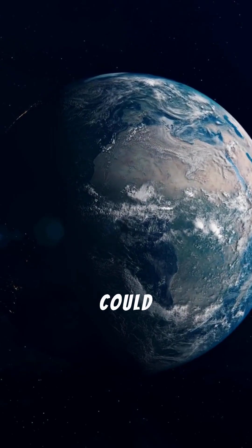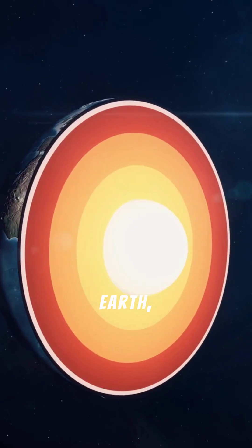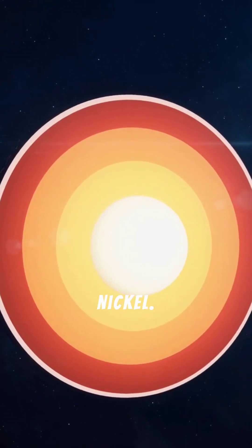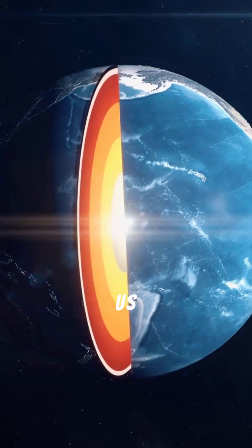Earth's core is slowing down, and it could shake up our planet's magnetic field. Deep inside Earth, there's a ball made of superhot iron and nickel. It's called the inner core, and it usually spins under our feet without us even knowing.